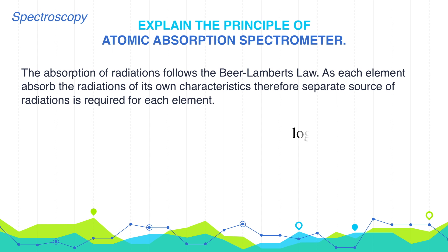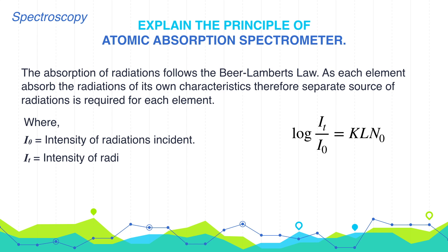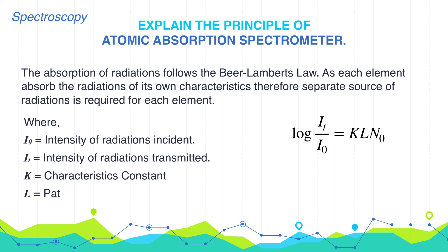The equation is: log of It divided by I0 equals K times L times N0. Where I0 is the intensity of incident radiation and It is the intensity of radiation transmitted. K is the characteristic constant, L is the path length of the flame in centimeters, and N0 is the number of atoms in the ground state.